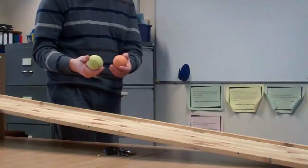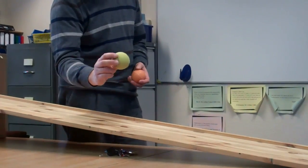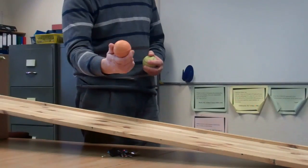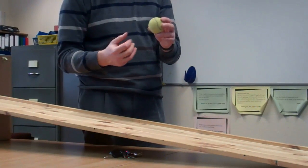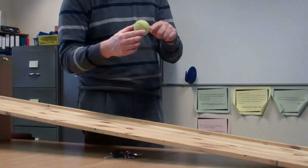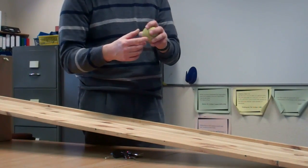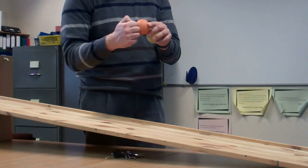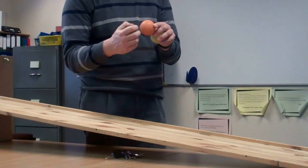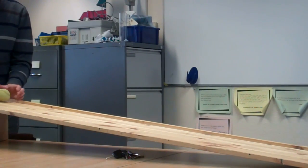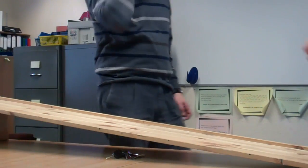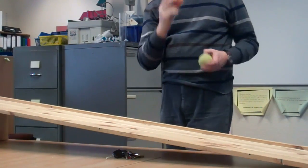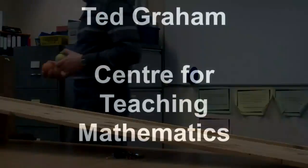This time we are going to compare the motion of a hollow tennis ball and a solid dog ball. Very similar to the cans — the tennis ball has the mass concentrated further away from the centre, while the solid dog ball has the mass spread evenly. And we can see that the solid ball rolls more quickly than the hollow ball.